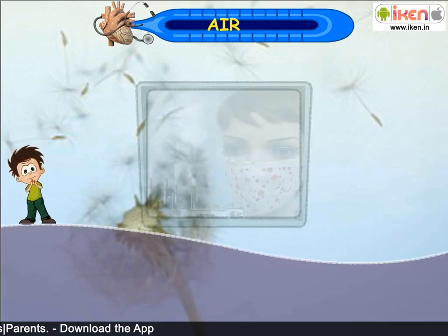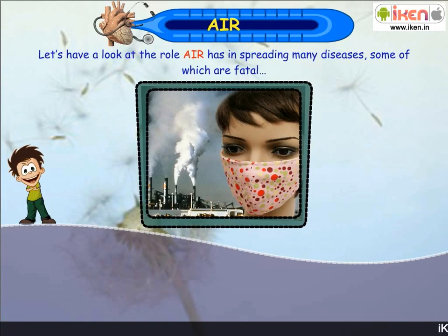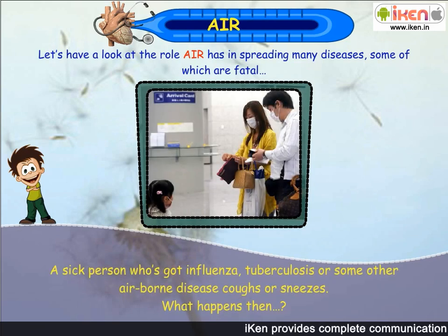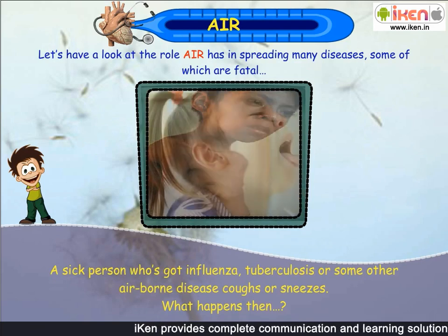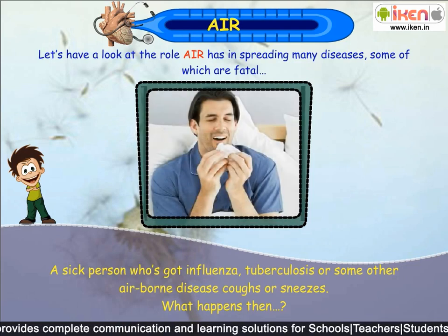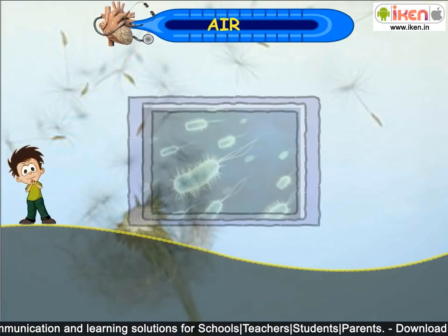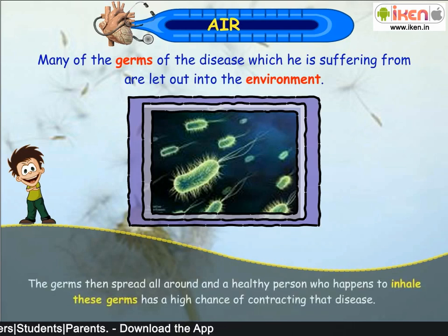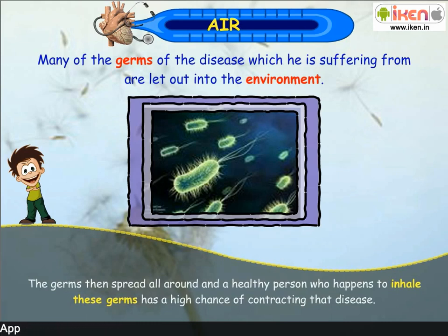Let us have a look at the role air has in spreading many diseases, some of which can be fatal. A sick person who is suffering from influenza, tuberculosis or some other airborne disease coughs or sneezes. Many of the germs of the disease which he is suffering from are let out into the environment. The germs then spread all around, and a healthy person who happens to inhale these germs has a high chance of contracting that disease.